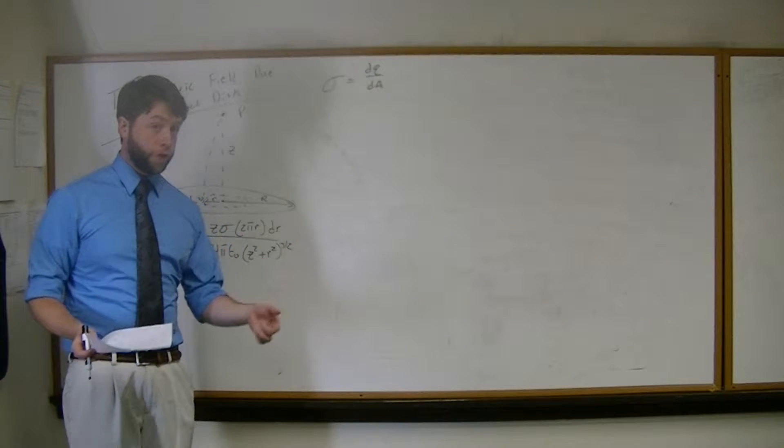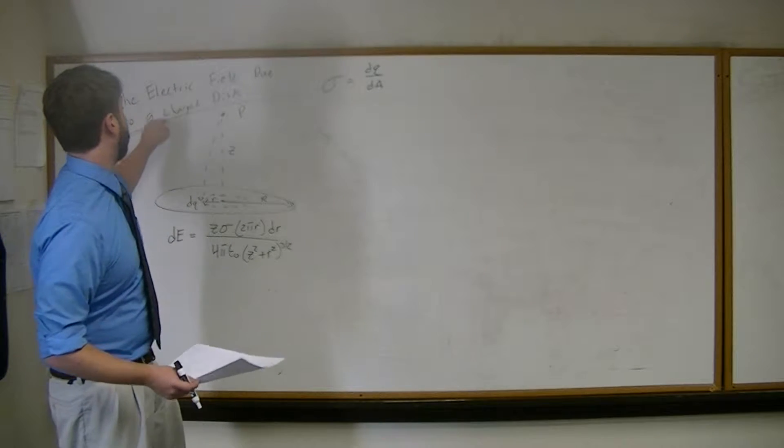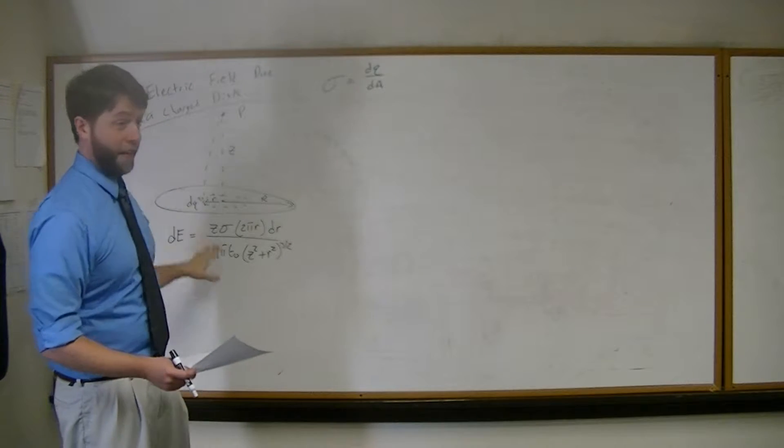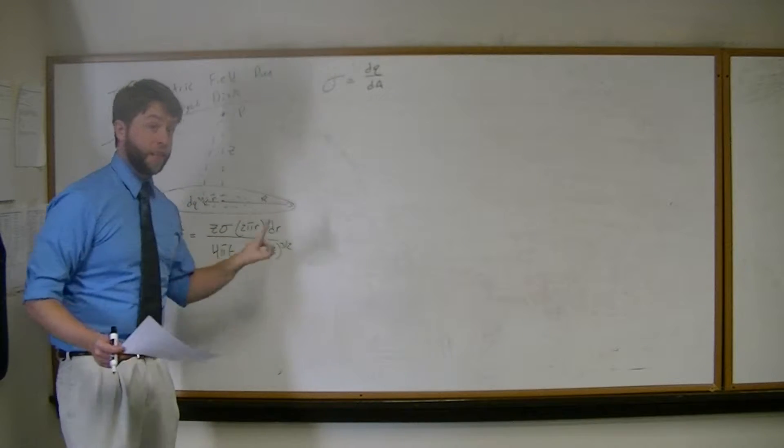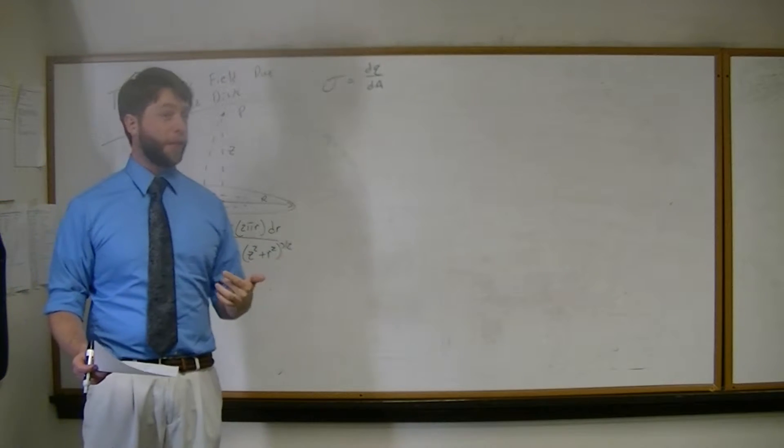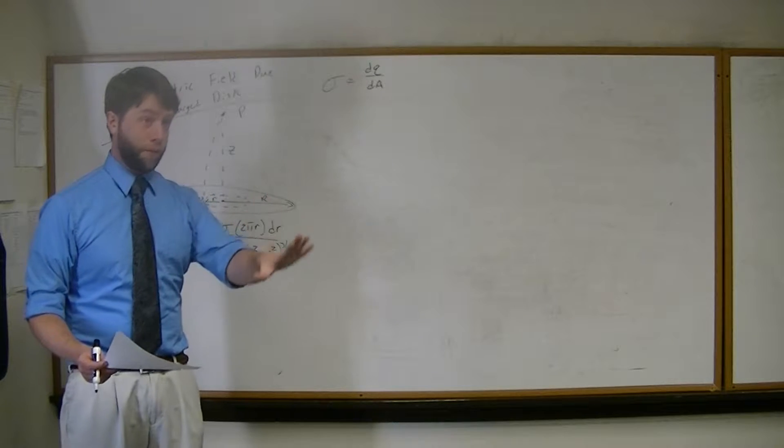Okay, so now we're going to use our ring of charge example to do the electric field due to a charged disk. So now we have a solid disk, not just a ring. You should probably see where the integral is going to change here already, but I'm going to go through it.